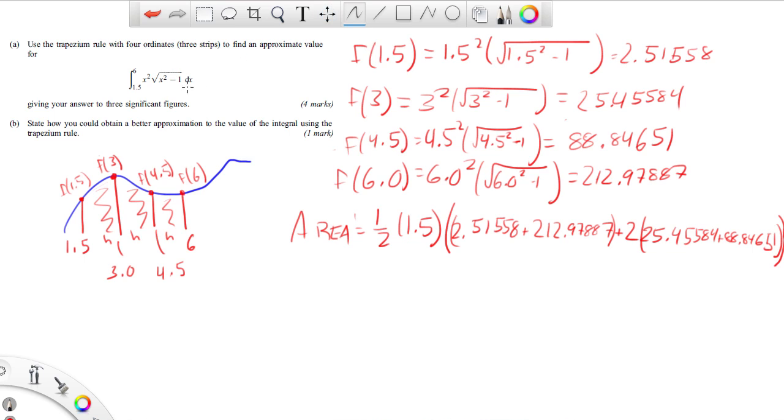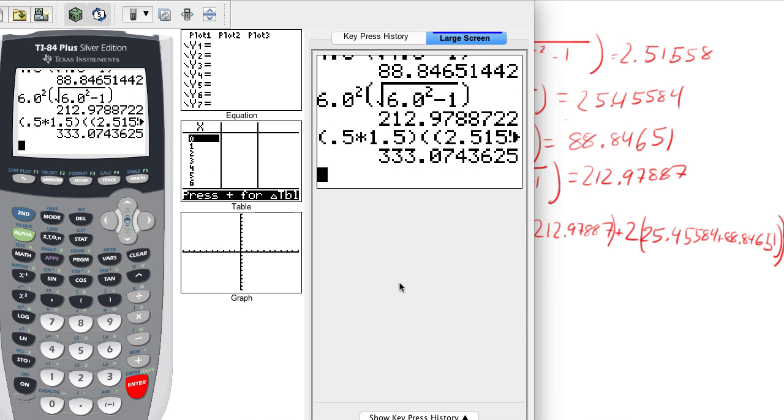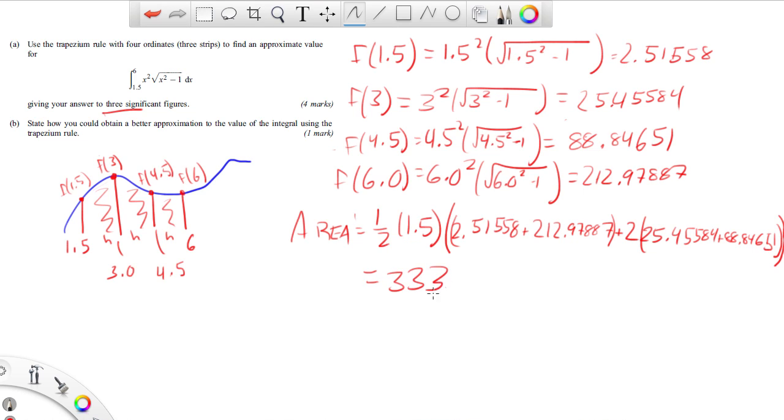And I get this. So they actually say to three significant figures, so with all of this it equals 333 because those are my significant figures. And that's it.